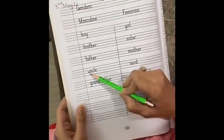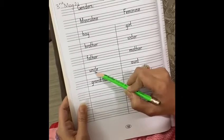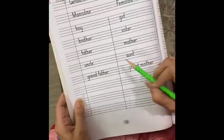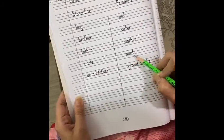Now see, another masculine, uncle. And the feminine of uncle is aunt.